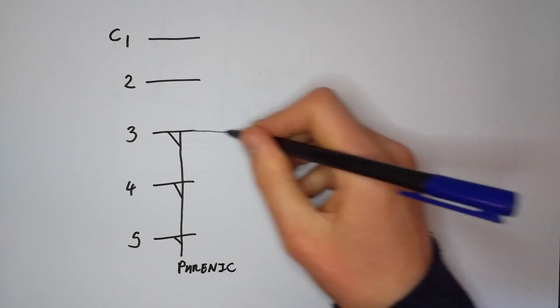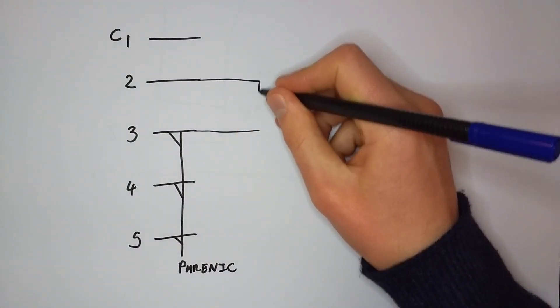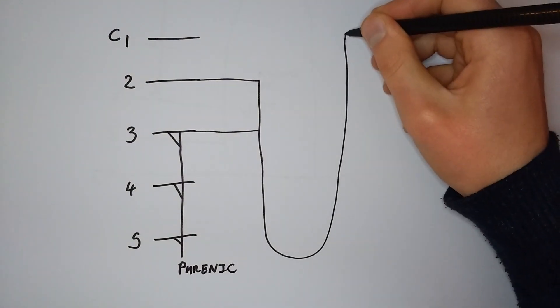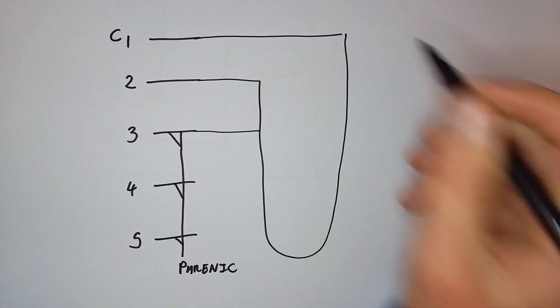Next we'll take C2 and 3 and turn them into a nice loop that reaches all the way back up to C1. This nerve loop is called the ansa cervicalis.